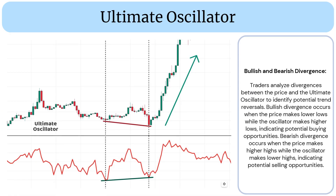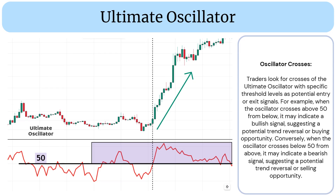Bullish and bearish divergence: traders analyze divergences between the price and the ultimate oscillator to identify potential trend reversals. Bullish divergence occurs when the price makes lower lows while the oscillator makes higher lows, indicating potential buying opportunities.